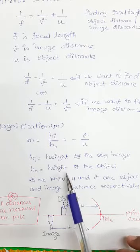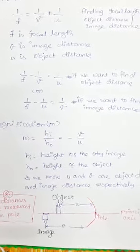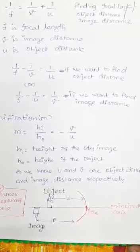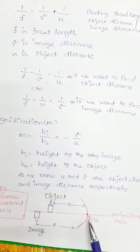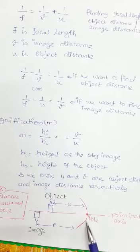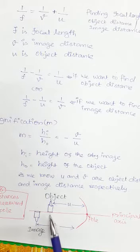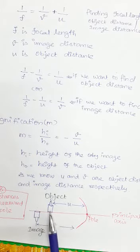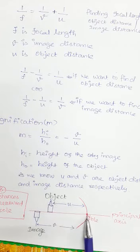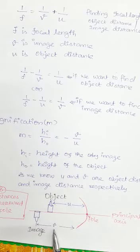Here hi is the height of the image and ho is the height of the object, and u and v are object distance and image distance respectively. For better understanding, I have drawn a concave mirror showing the pole and principal axis. The object — represented as a candle — is placed here, light rays travel from it, reflect off the mirror, and the image forms here. The image is real and inverted. Object distance is measured from the object to the pole, and image distance is measured from the image to the pole.